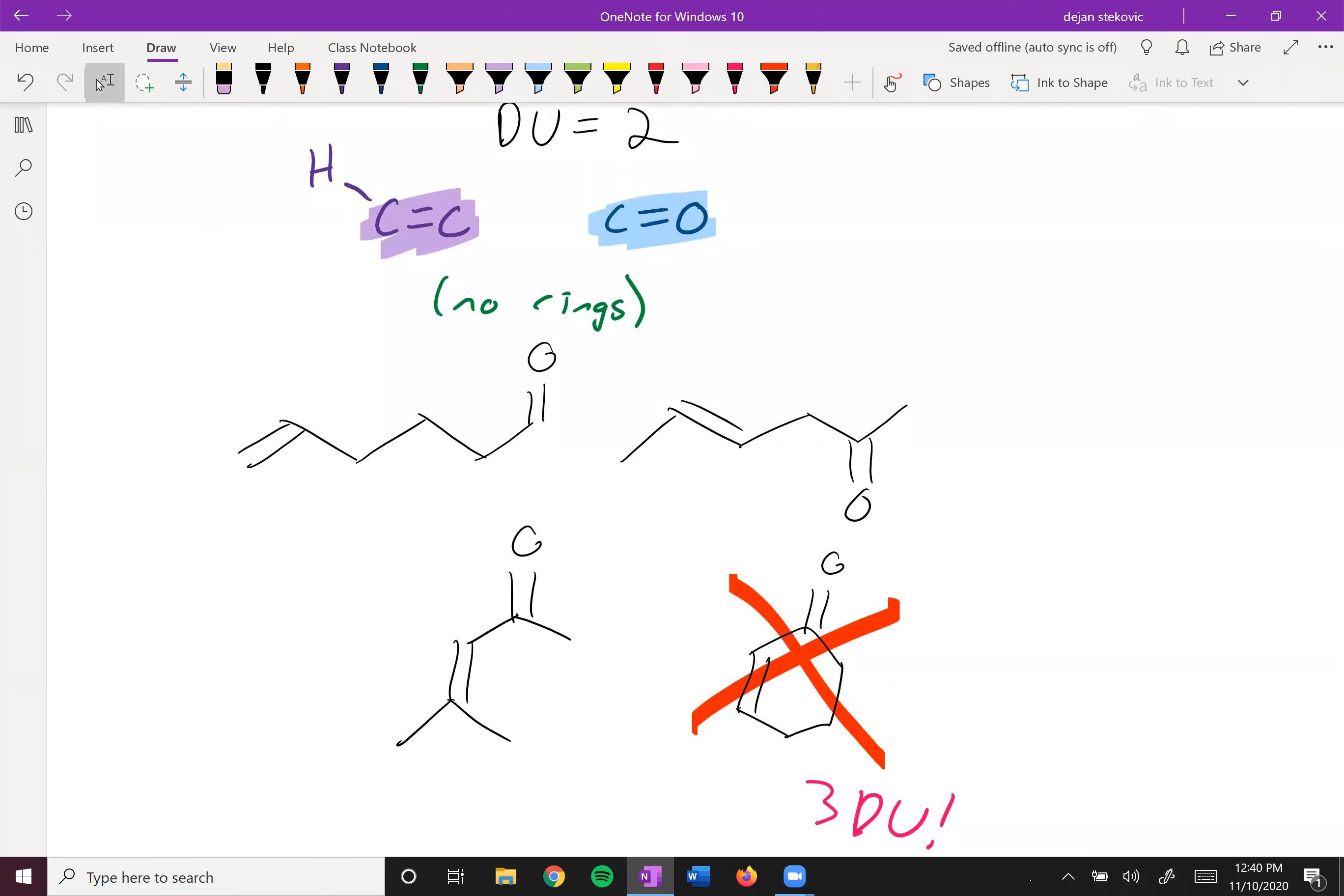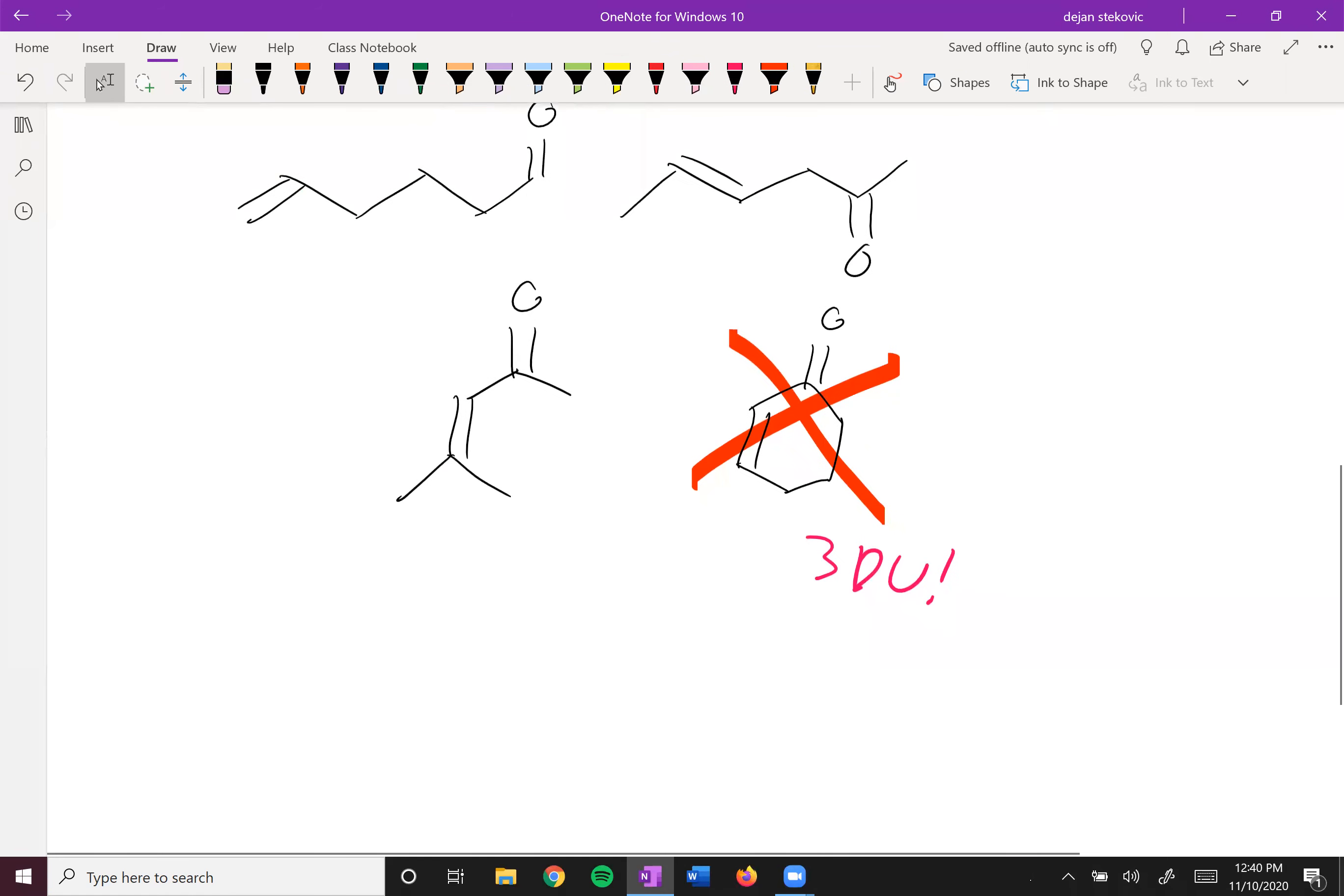We can list a bunch of possibilities of what our compound can be. How are we going to tell which one it is? We're going to use NMR for that purpose. NMR is really going to be the most powerful tool, but mass spec and IR can give us a good starting point.